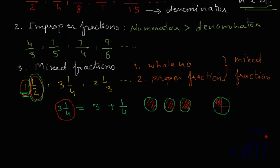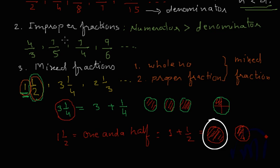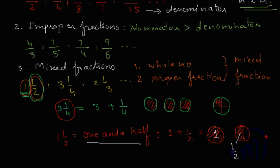Similarly, if we talk about 1 and 1/2, this is also called one and a half. This means 1 whole plus 1 half. In terms of pizzas, this is 1 whole pizza and half of the second pizza. The 1 represents the whole pizza and the half represents the remaining part. So 1 and 1/2 is called one and a half. This was about the types of fractions.